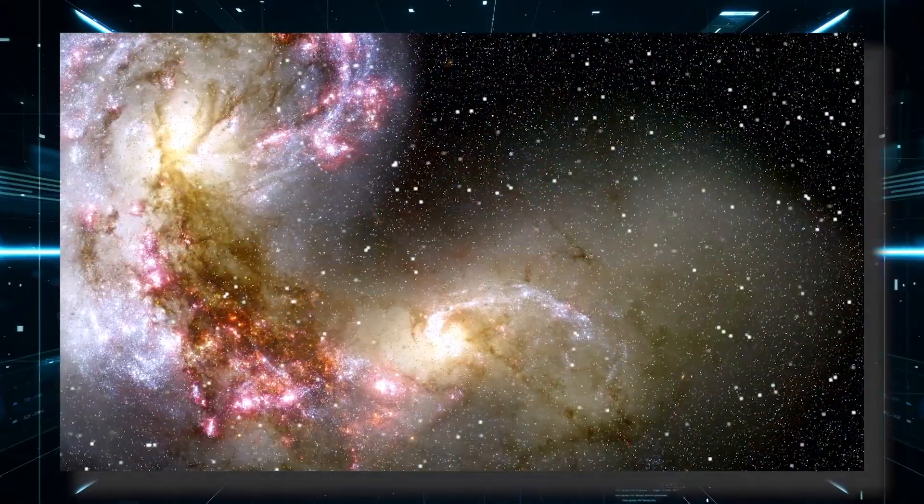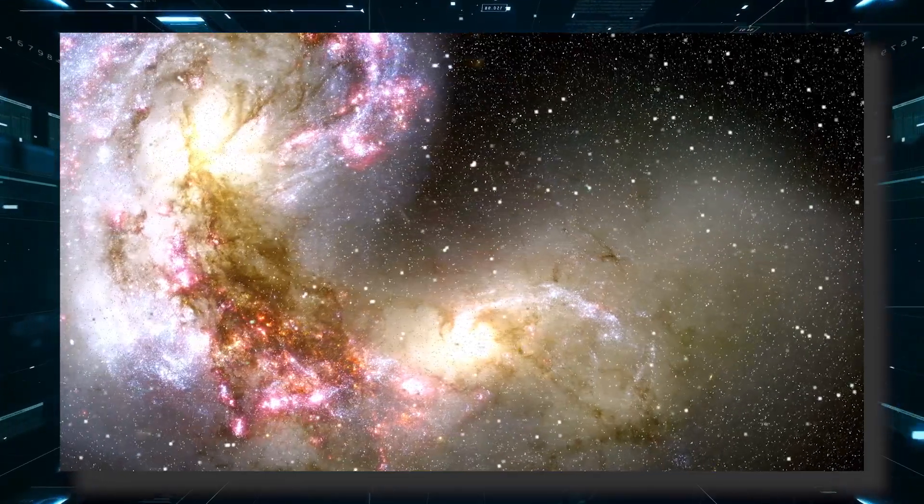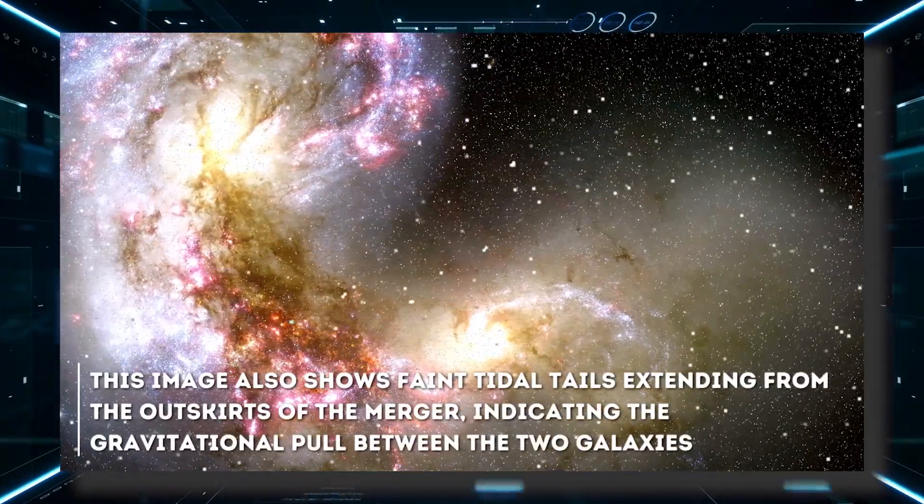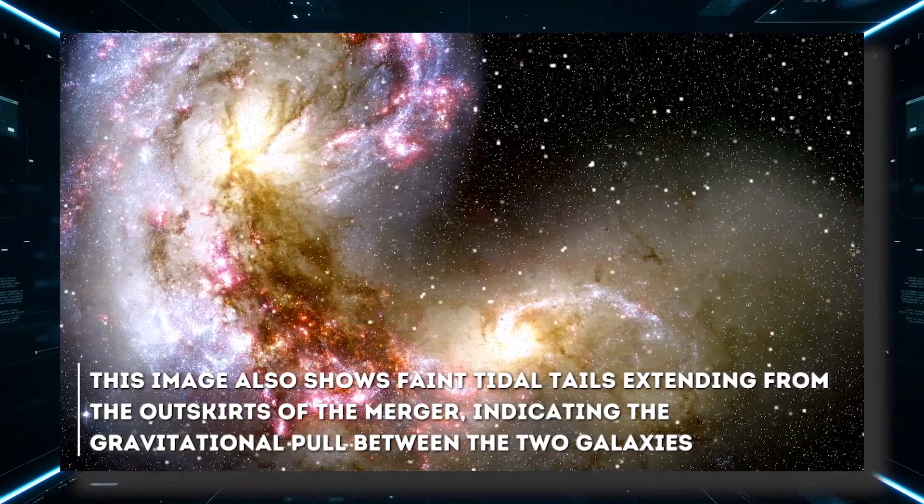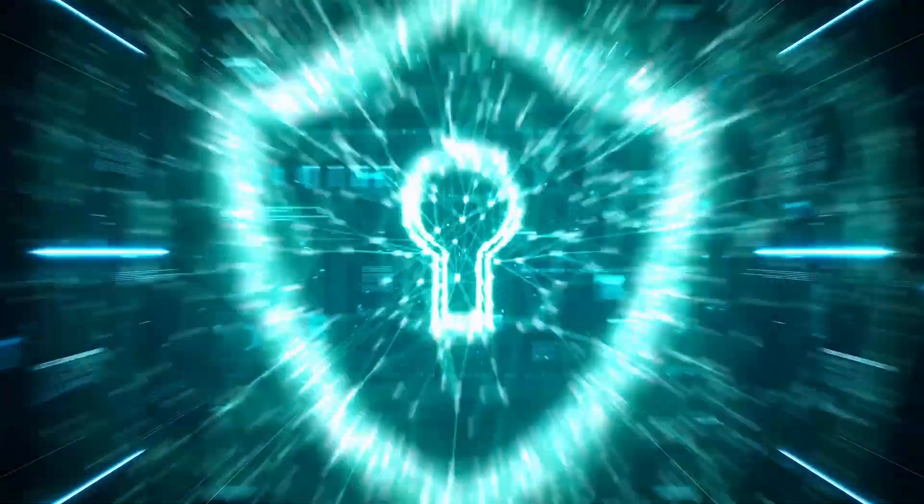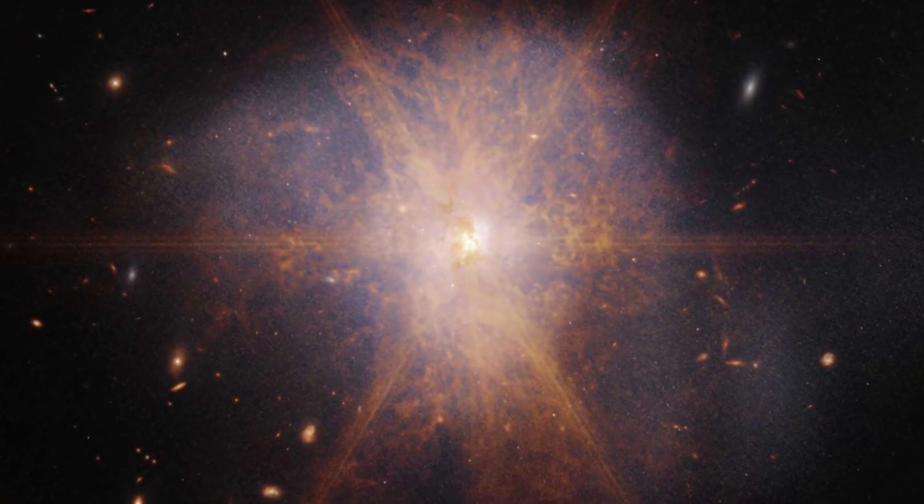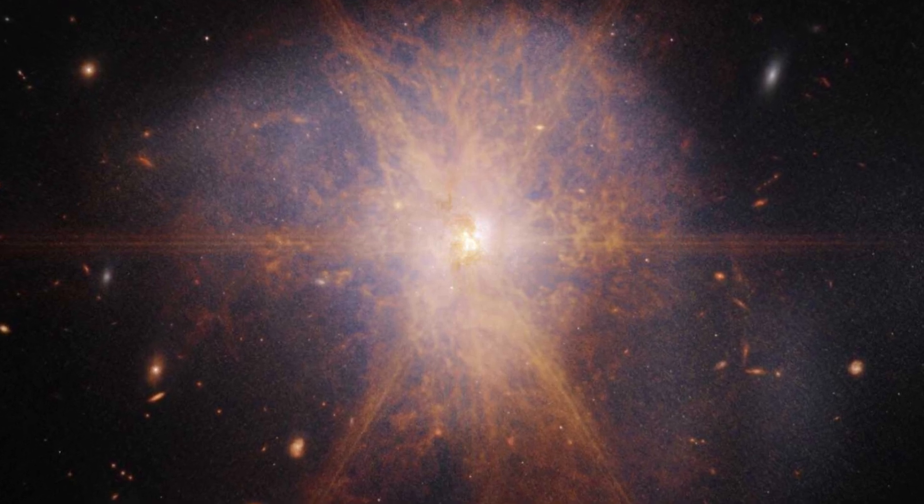The latest views from the James Webb Space Telescope show an impressive galactic merger of the two galaxies. This image also shows faint tidal tails extending from the outskirts of the merger, indicating the gravitational pull between the two galaxies. Finally, the reddish and orange streams and filaments represent organic materials scattered in ARP 220.